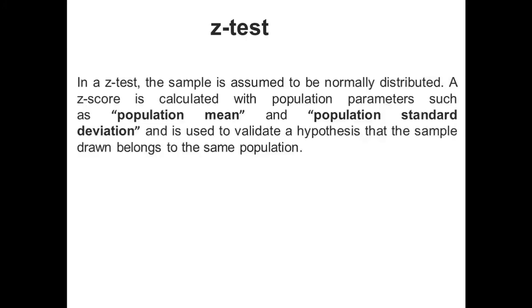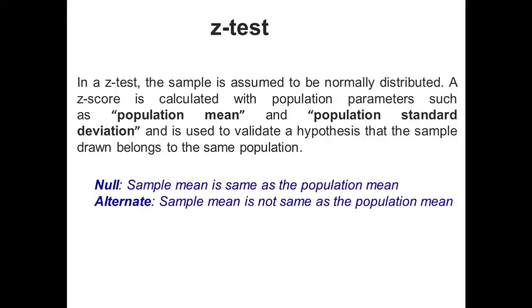Z test: In a Z test, the sample is assumed to be normally distributed. A Z score is calculated with population parameters such as population mean and population standard deviation, and is used to validate a hypothesis that the sample drawn belongs to the same population. In a Z test, the null hypothesis states that the sample mean is the same as the population mean, whereas the alternate hypothesis states that the sample mean is not the same as the population mean.